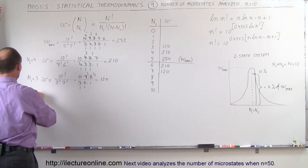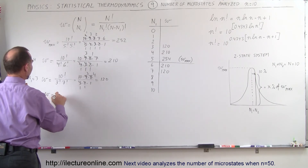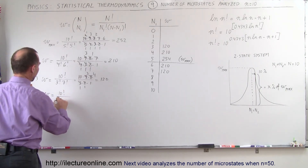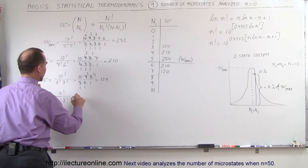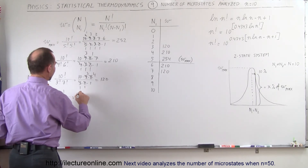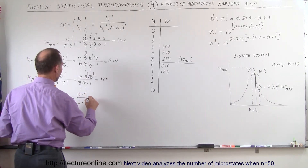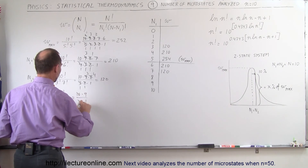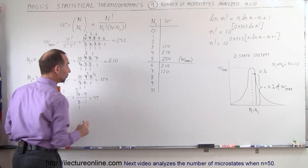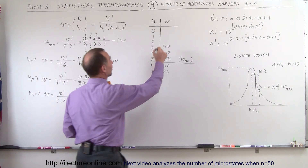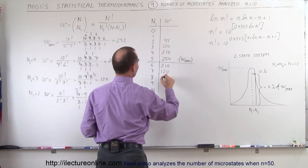For n1 equals 2: the number of microstates equals 10 factorial divided by 2 factorial times 8 factorial. That is 10 times 9 divided by 2 times 1, which gives 45. So there are 45 microstates in that case — 45 on each side.